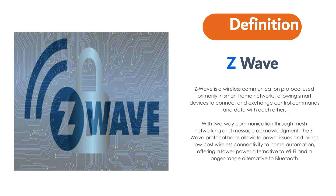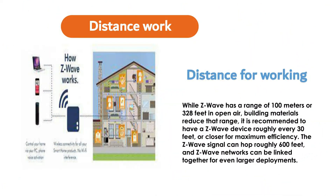It supports full mesh networks, enabling numerous Z-Wave devices to communicate with each other simultaneously. Z-Wave has a range of 100 meters or 328 feet in open air, but building materials reduce that range. It is recommended to have a Z-Wave device roughly every 30 feet or closer for maximum efficiency. Z-Wave signal can hold roughly 600 feet and Z-Wave networks can be linked together for even larger deployments.